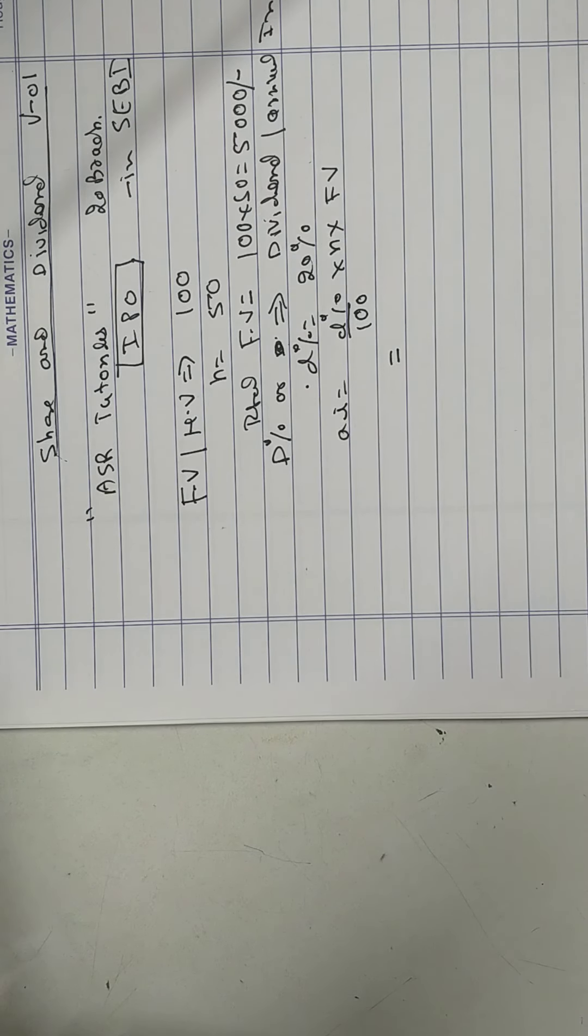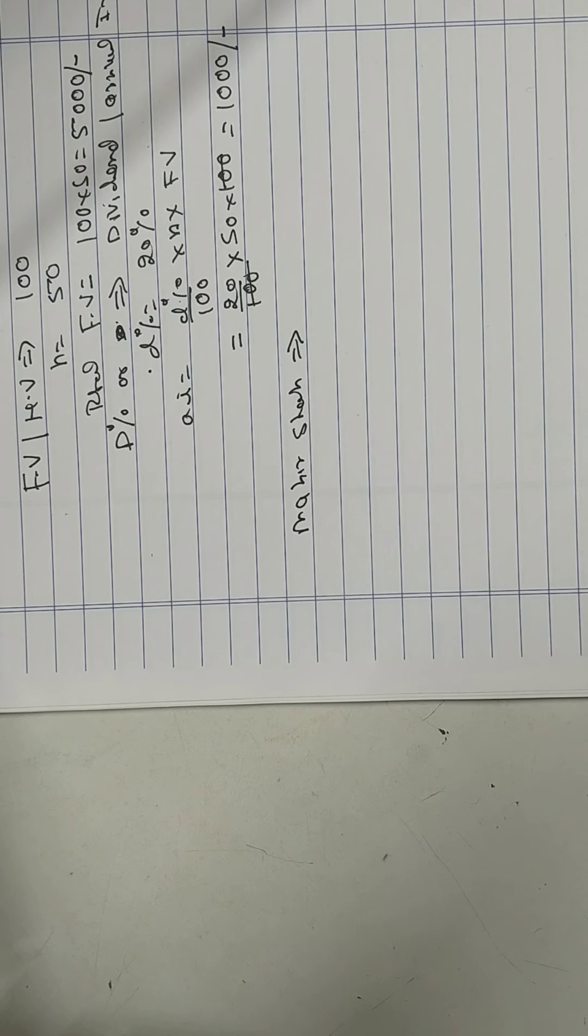Dividend person will calculate dividend or annual income paid by company. Suppose my company decided they'll pay 20% dividend. So annual income is D% upon 100 into number of shares into face value. Remember, annual income or dividend is always calculated on face value or nominal value - that is the basic price of share. D% is 20, number of shares was 50, and face value 100.